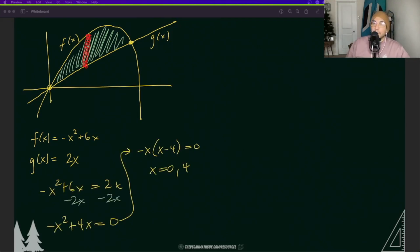It looks like we have 0 and 4 and on the graph that means that they intersect at (0,0) and on the top we know that this is going to be 4 and we can figure out that y value by plugging it into any one of the functions. If you plug it into g(x) that's going to be 8 and that's going to be very helpful for when we find the area in terms of y.